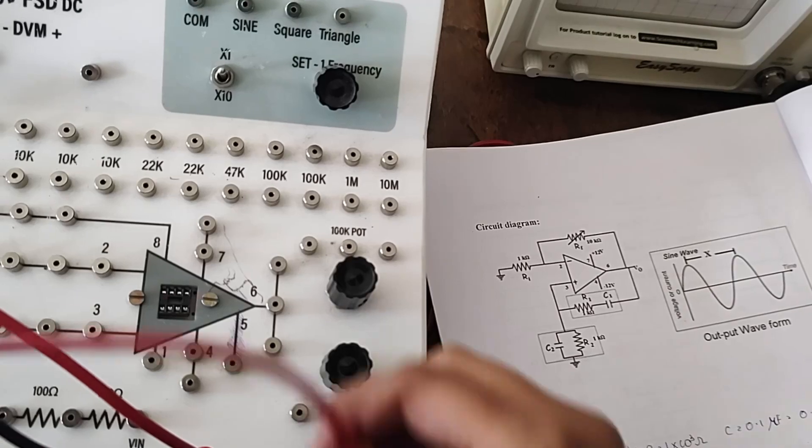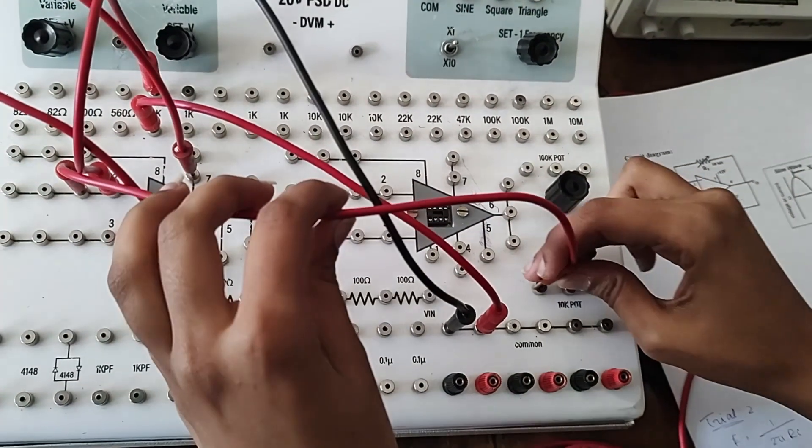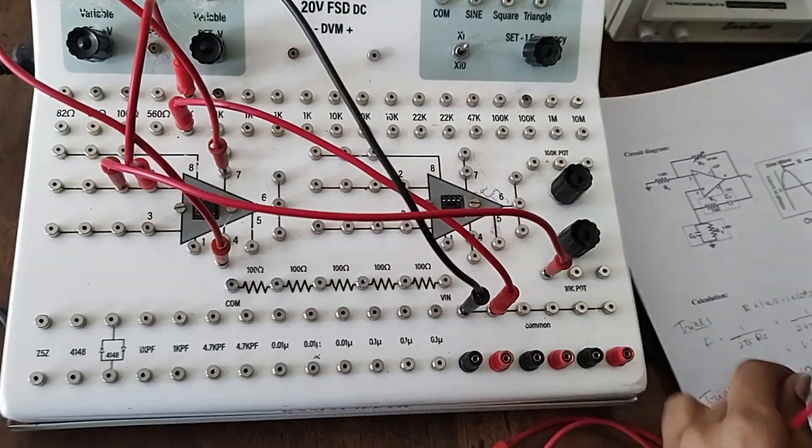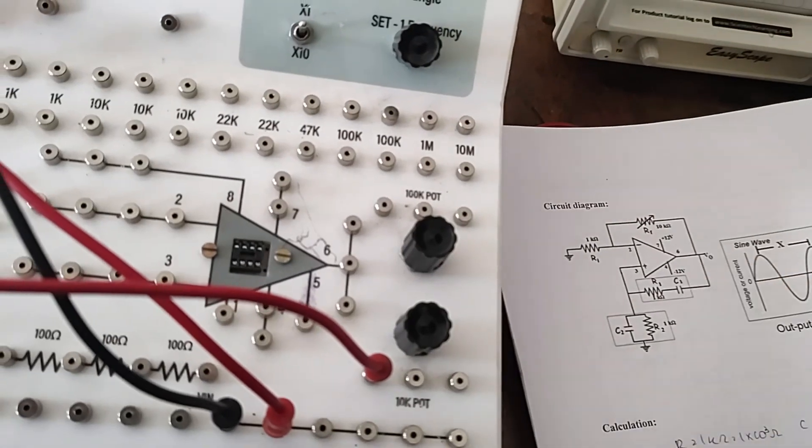2 to potentiometer, 2 to 10k potentiometer. And then the other end of 10k potentiometer back to 6.